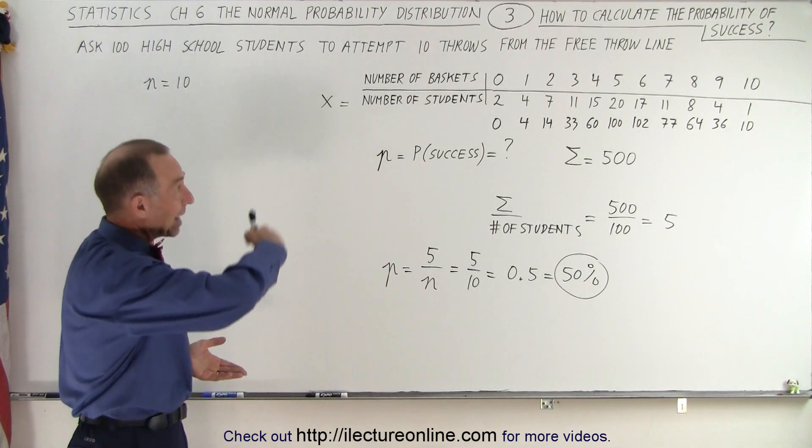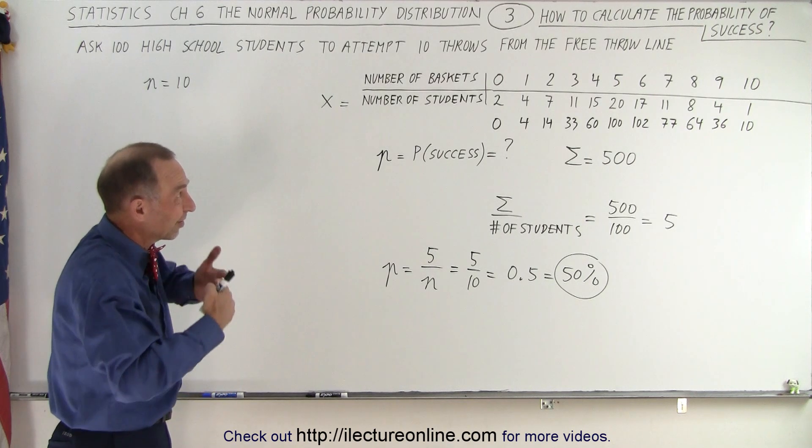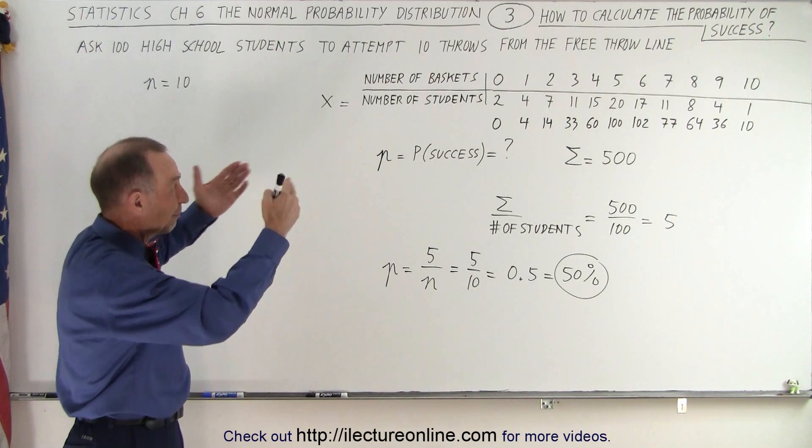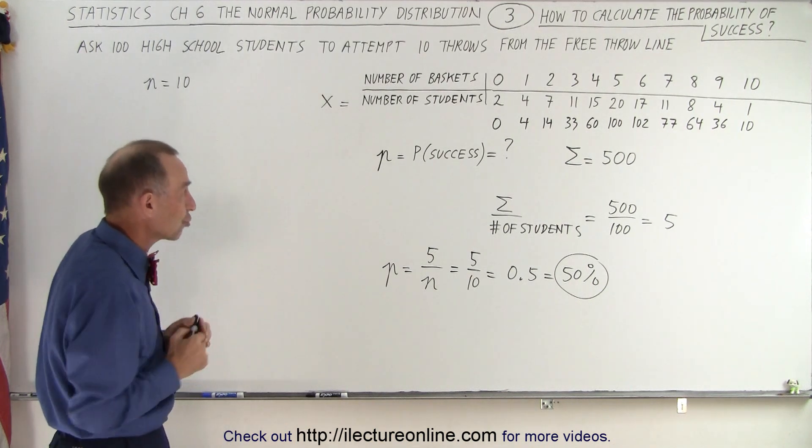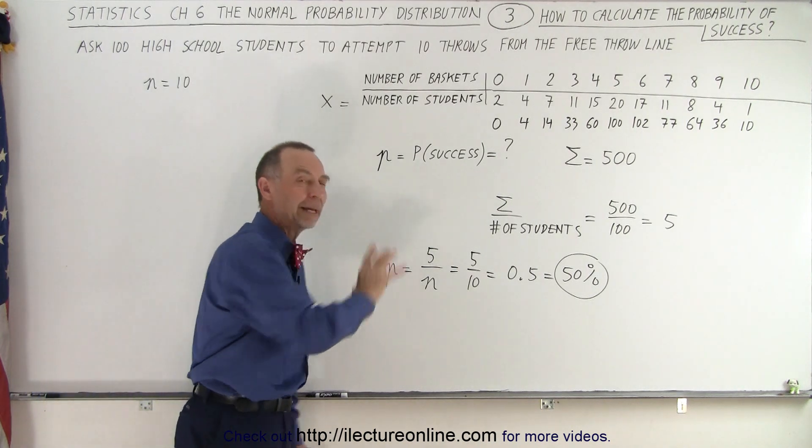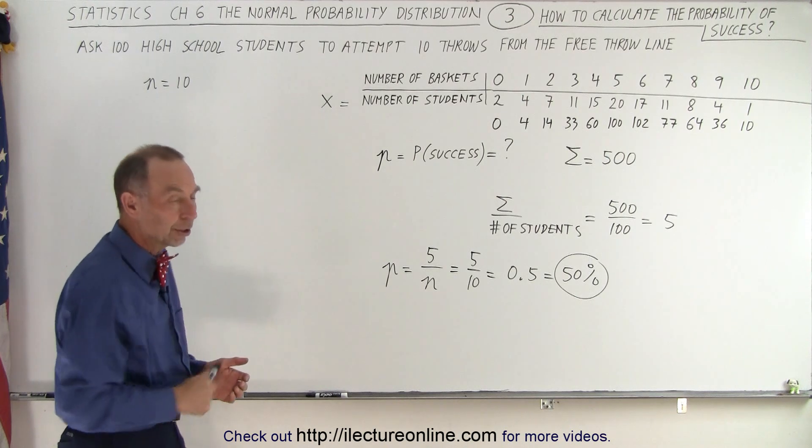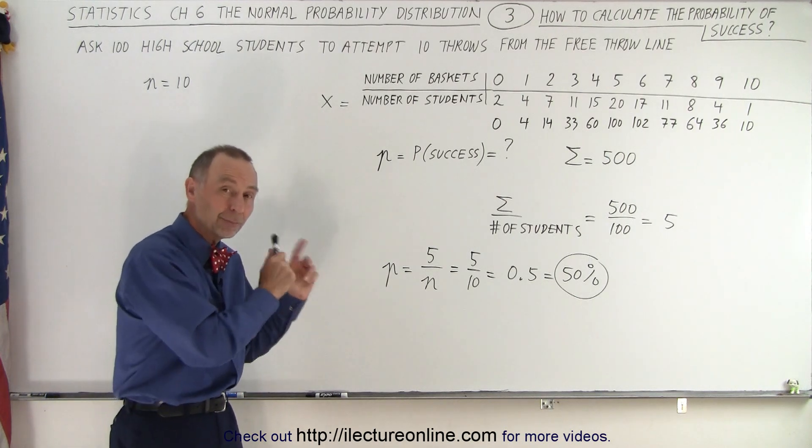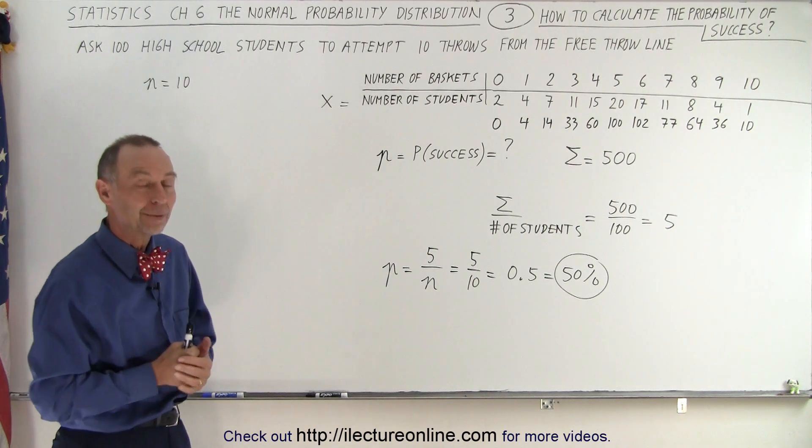So one of them is when we have a random distribution of events, essentially the random distribution of baskets made when 100 students are picked and they each are allowed 10 tries, the average probability of success of anyone making a basket at any time is 50%. And we call that the probability of success for this particular random distribution. And that is how it's done.